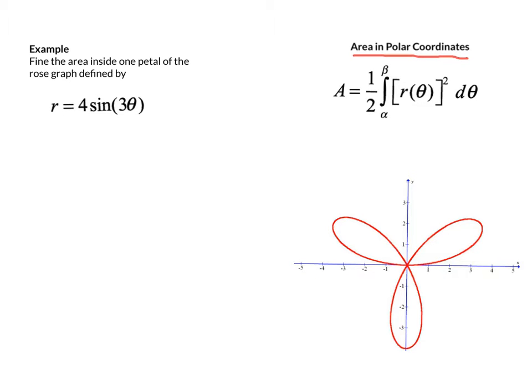It's derived from the area of a sector of a circle, which is A equals one half theta times r squared. The difference here being that the radius is not constant, it's a function of theta. So if we take one half r squared theta, and for each small change in theta we replace that with d theta, we get our formula.